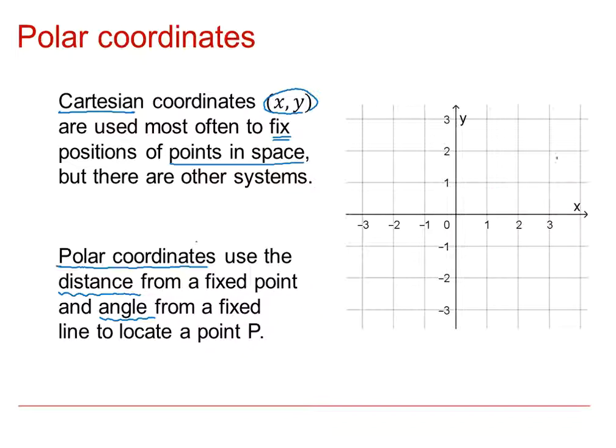For example, here, if I choose the point 3, 2, so they are the Cartesian coordinates 3, 2, we're now going to define that point in terms of its distance from the origin, which we usually refer to as r, and the angle made with this axis, theta.